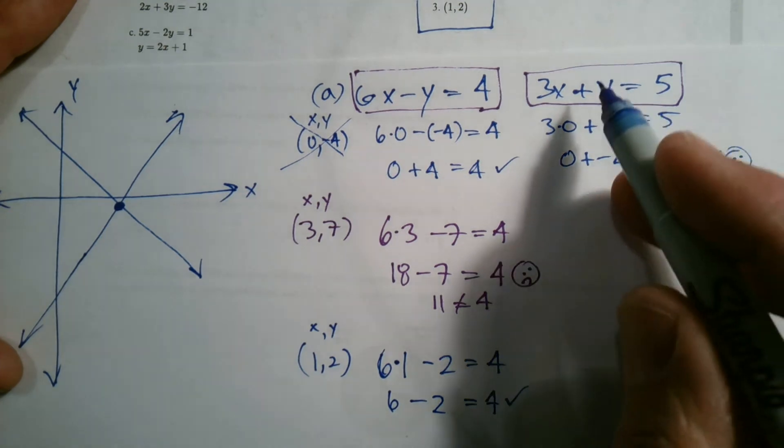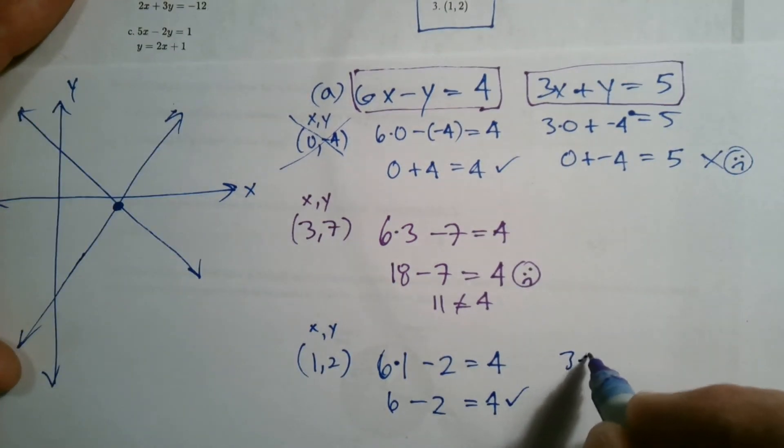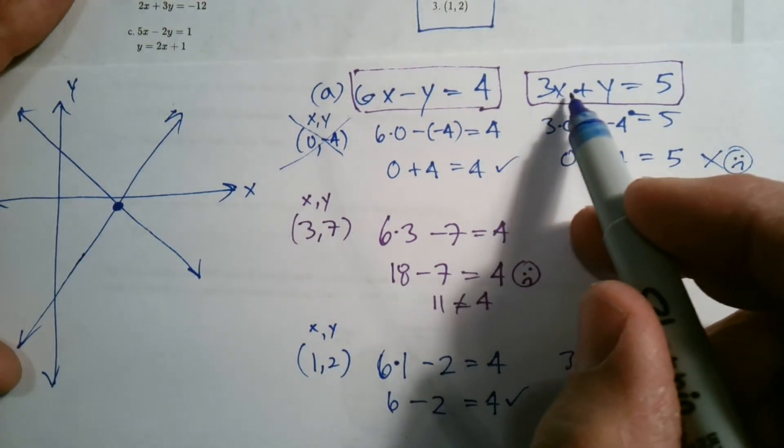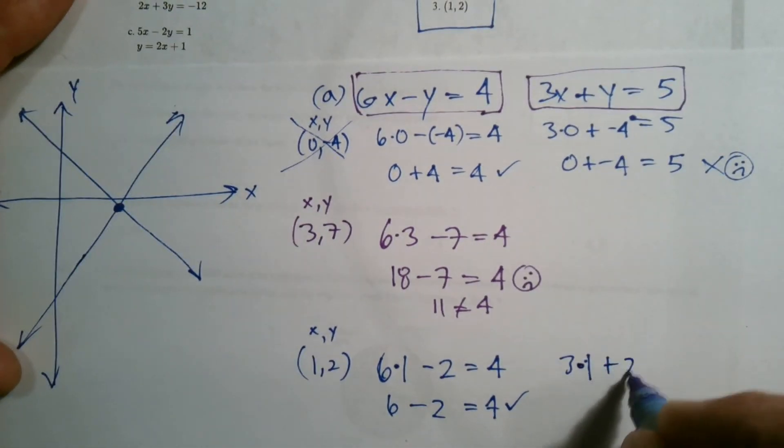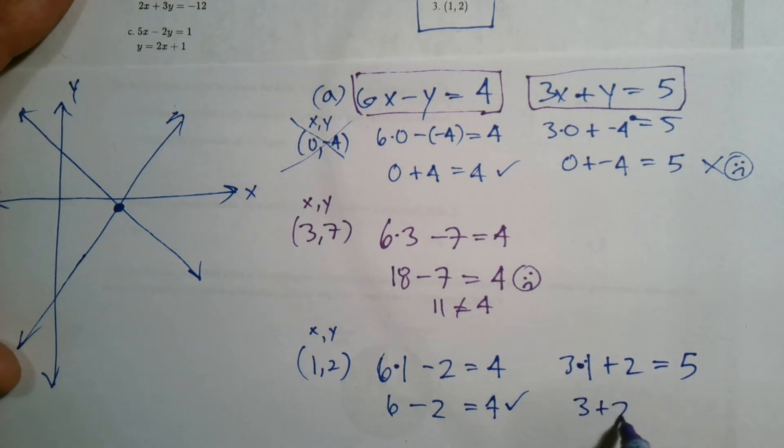So let's check this one over here. So I'm going to put in 3 times 1. So the y is a 2. So 3 times 1 plus 2, does that equal 5? So 3 times 1 is 3, 3 plus 2, sure enough, it equals 5. Check. Awesome.